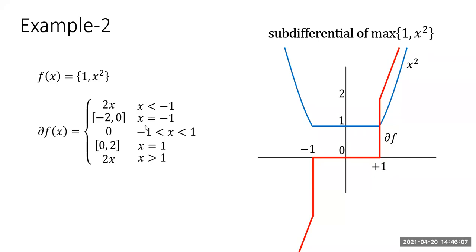When x equals negative 1, anything between negative 2 and 0 will serve as the sub-gradient — the entire interval from negative 2 to 0 is the sub-differential of f at x equals negative 1. Likewise, when x equals 1, the entire interval between 0 and 2 is the sub-differential of the function.